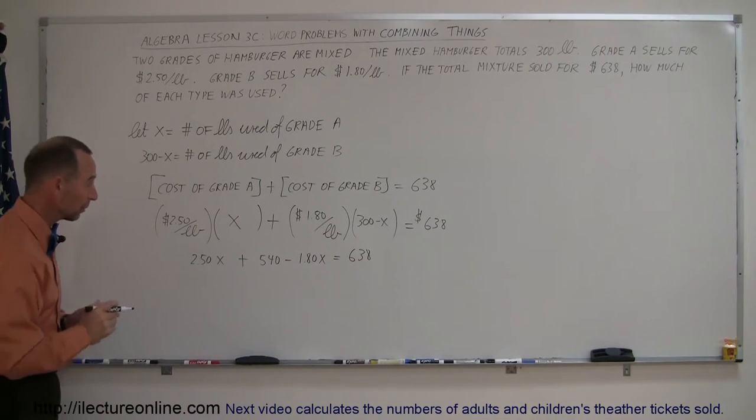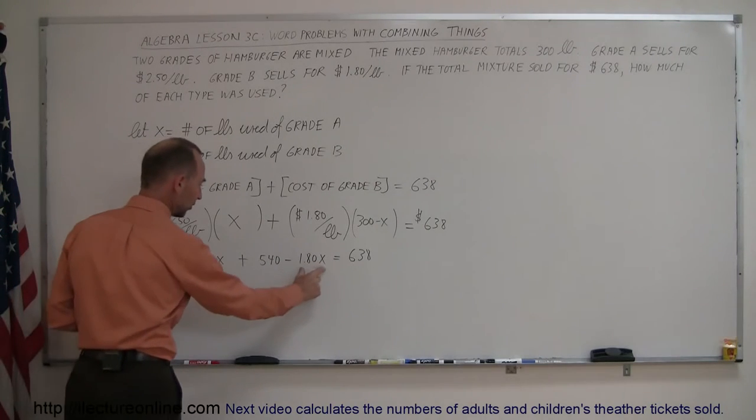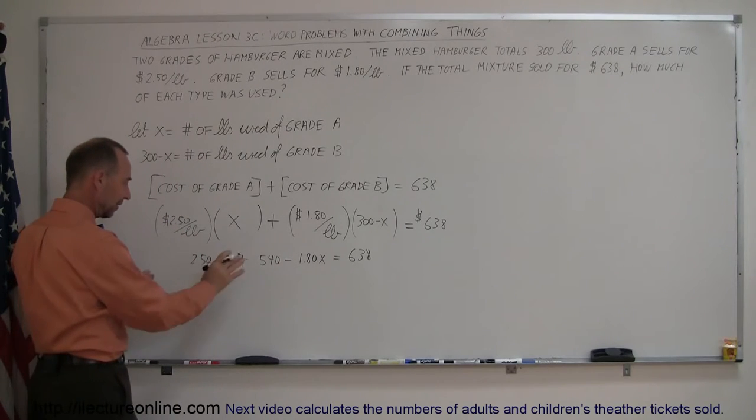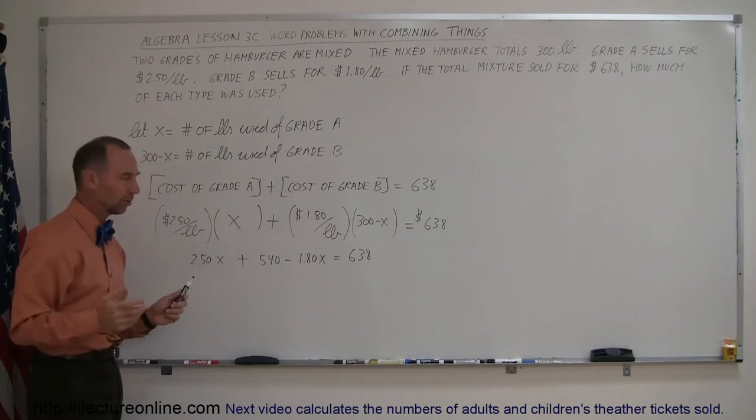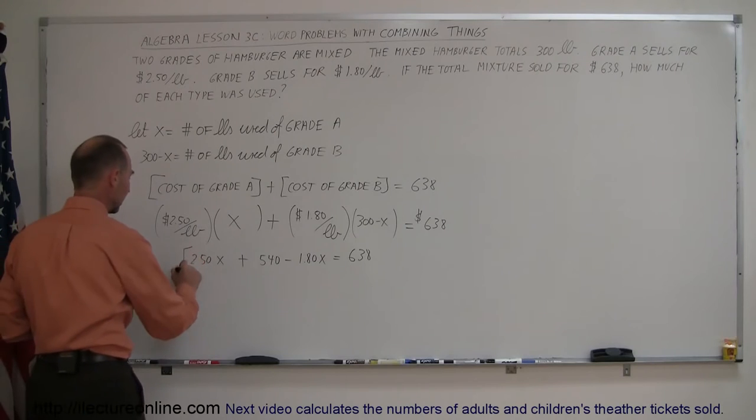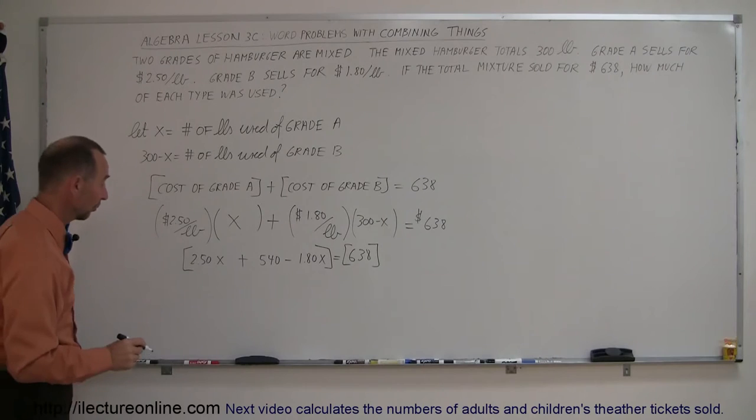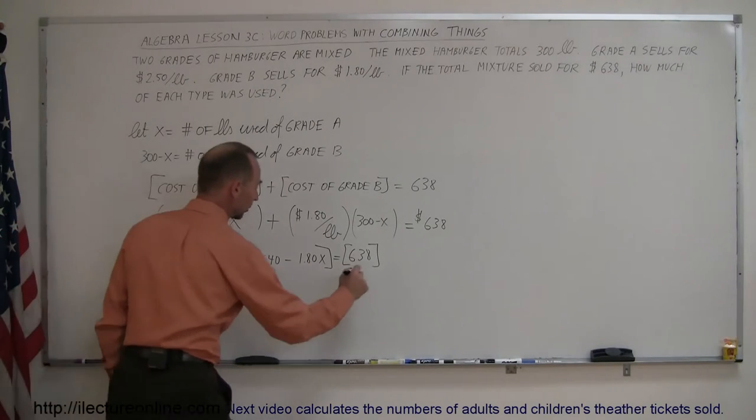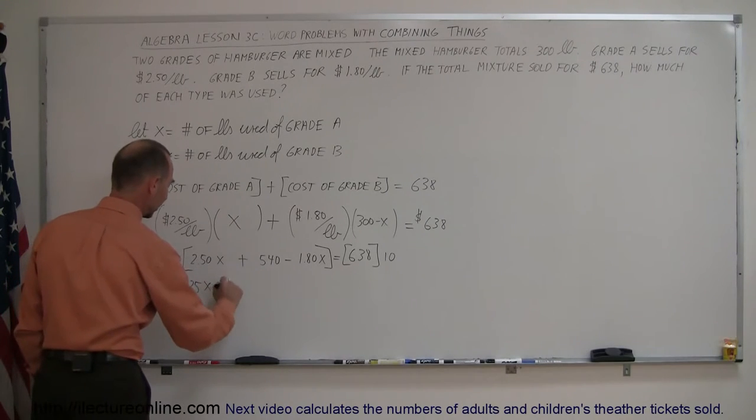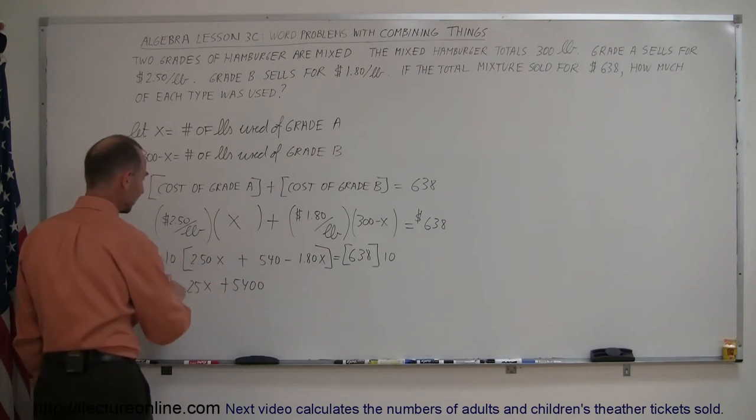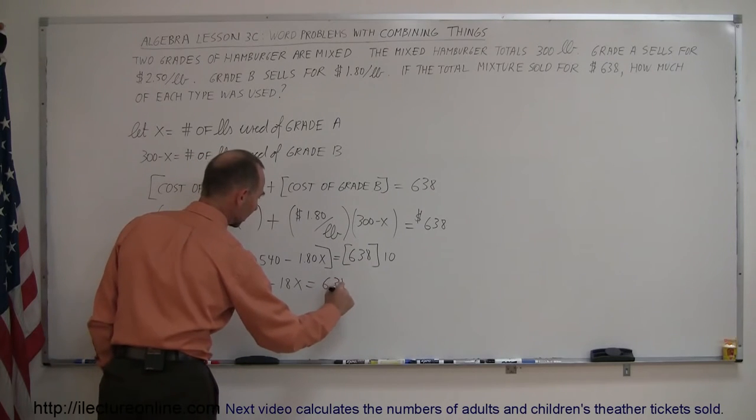Now we're ready to solve this equation for X. Notice that we have a decimal here, we have a decimal here. To get rid of the decimal place, we have to multiply everything by 10. If I multiply this by 10, I get 25. If I multiply this by 10, I get 18. So, I can go ahead and multiply both sides of the equation by 10. Multiply this times 10, multiply this times 10, what do we get? 10 times this gives me 25X, 10 times this gives me plus 5400, and 10 times this gives me 18, that's minus 18X, and that equals 10 times this, which is 6380.